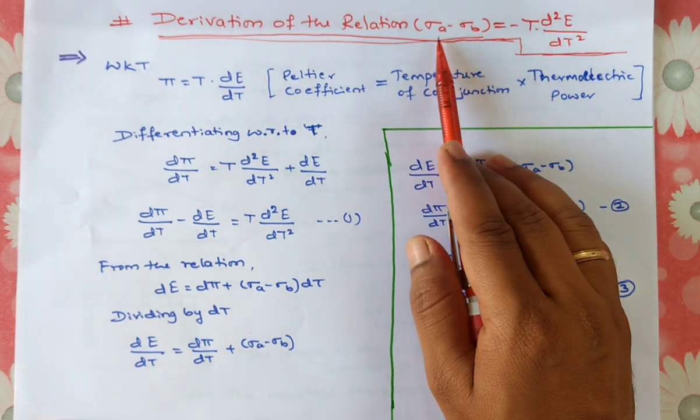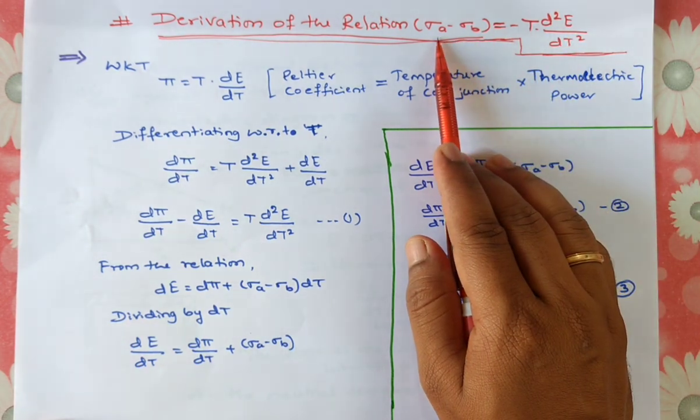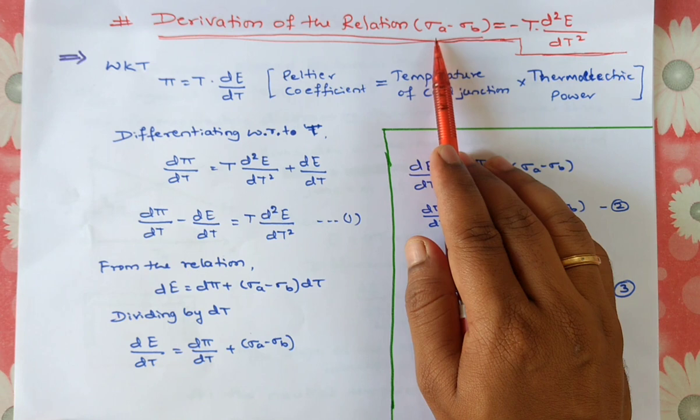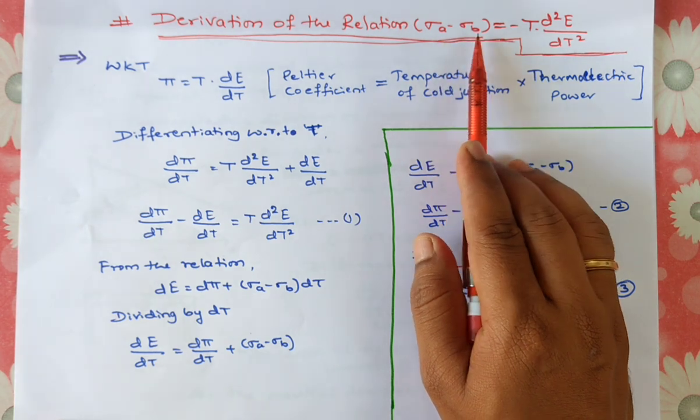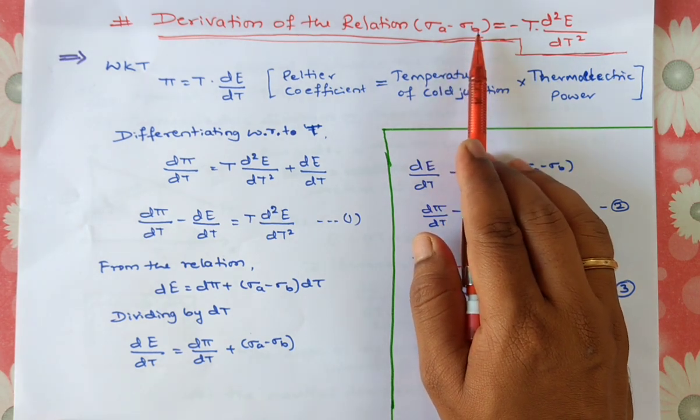Here sigma a is nothing but the Thomson coefficient of metal a, and sigma b is nothing but the Thomson coefficient of metal b.